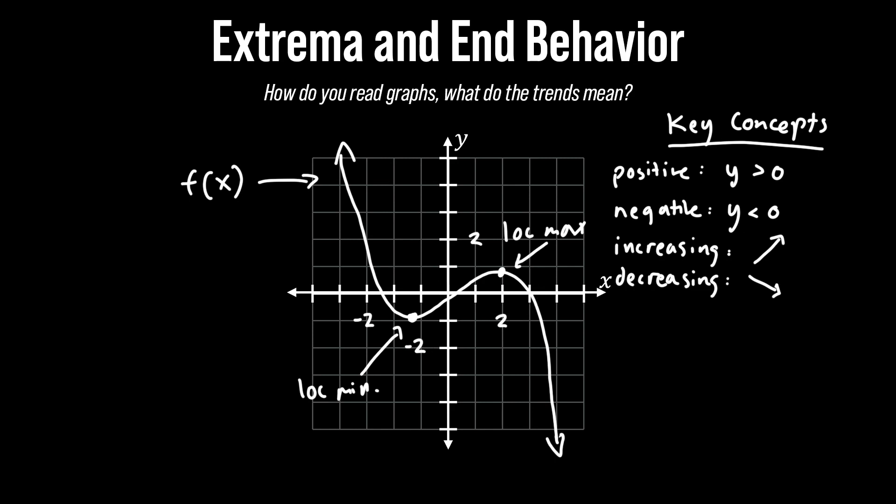So a local max you can visualize on the graph as a peak while the minimum is more like a dip. Now let's talk about end behavior.